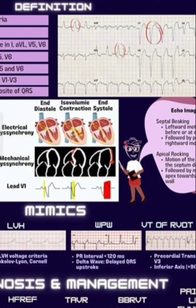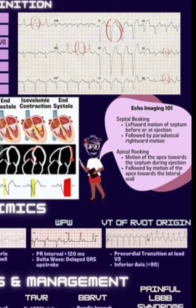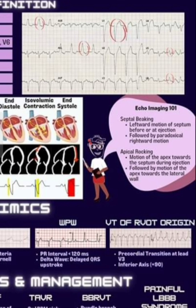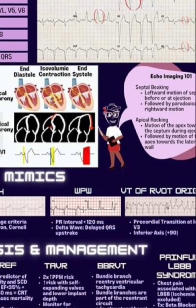Bundle branch re-entry VT is a functional arrhythmia associated with structural heart disease; treatment is radiofrequency ablation. Painful left bundle branch block syndrome refers to chest pain associated with LBBB with ischemia excluded, treated with beta blockers, CRT, or His bundle pacing.